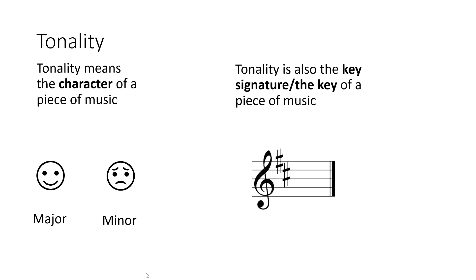Tonality can also mean the key signature or the key of a piece of music, and the key signature is often found at the beginning of the piece. It can be sharps or it could be flats. A key signature tells us what notes will need to be sharpened or flattened. In this case we've got two sharps on the F line and a C line, so every time we see an F and a C, we make them F sharp and C sharp.